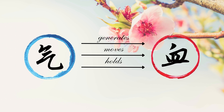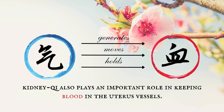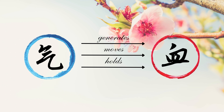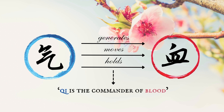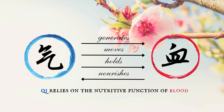Next, qi holds blood in the blood vessels, thus preventing hemorrhages. This function belongs primarily to the spleen. Besides, kidney qi also plays an important role in keeping blood in the uterine vessels. These aspects of the qi-blood relationship are often expressed in the saying, 'qi is the commander of blood.' Blood also nourishes qi: while blood relies on qi's generating, pushing, and holding actions, qi on the other hand relies on the nutritive function of blood.